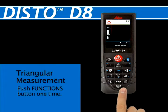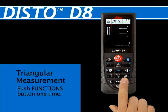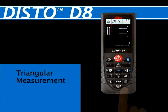Push the Functions button one time — the fourth button down on the right — to activate the triangular measurement function.